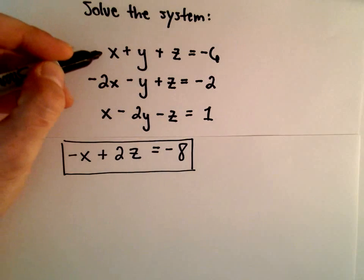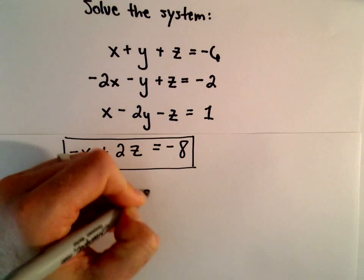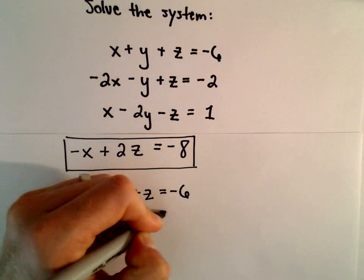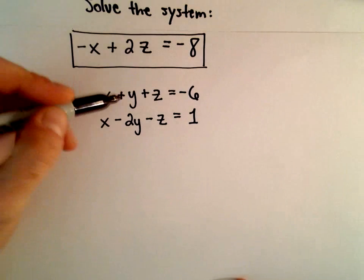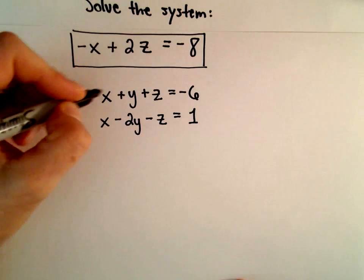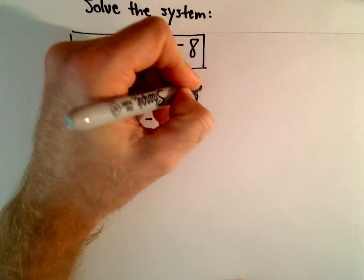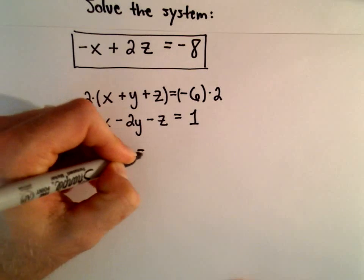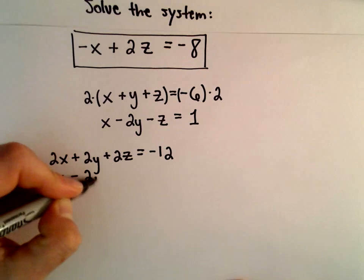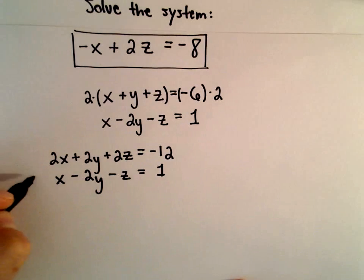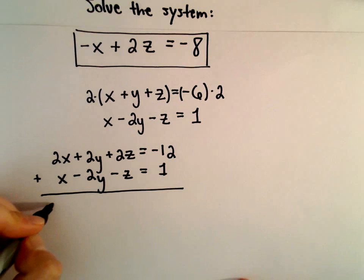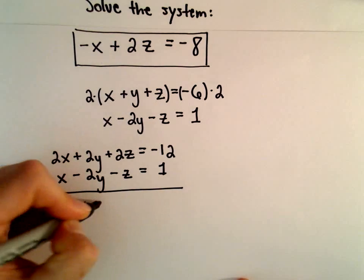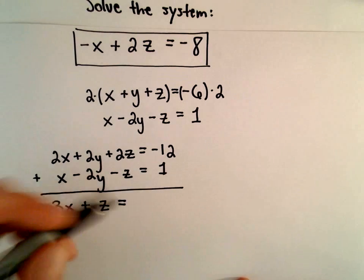I'm going to take my first equation, x plus y plus z equals negative six, and use my third equation, x minus two y minus z equals negative one, to create an equation where y is eliminated. I'll multiply both sides of my first equation by two: two x plus two y plus two z equals negative twelve. Adding these two equations together: 2x plus 1x will be 3x, the y's cancel, 2z plus negative z will be z, and negative twelve plus one will be negative eleven.